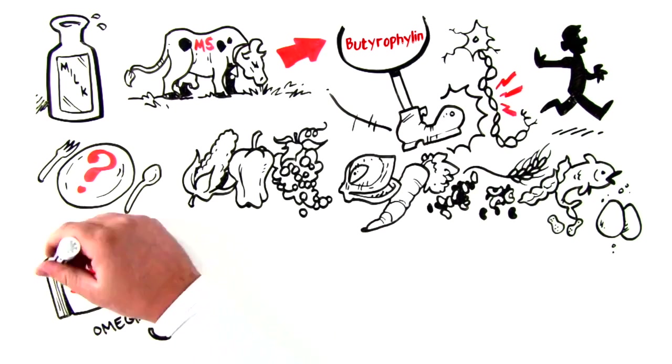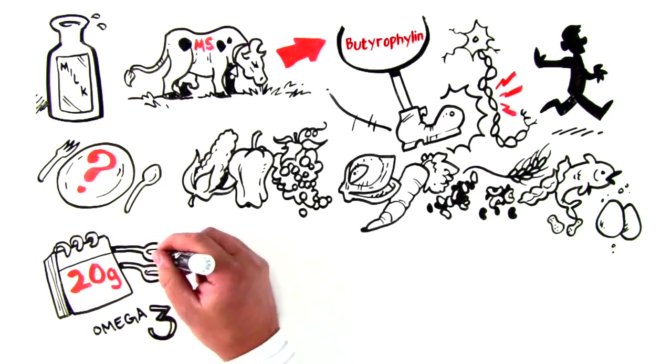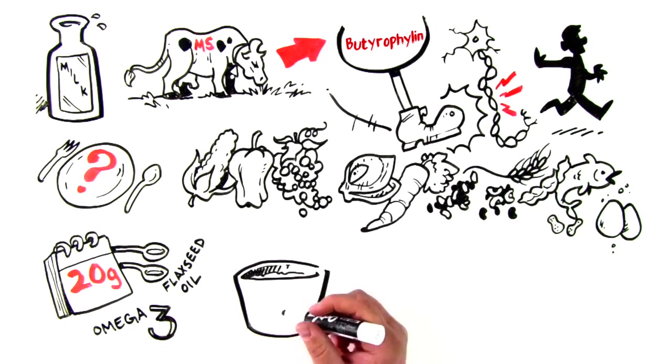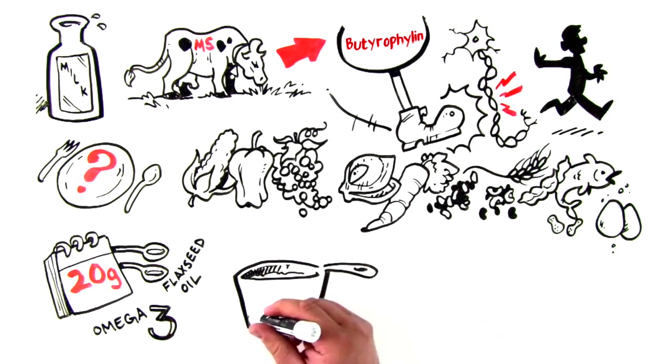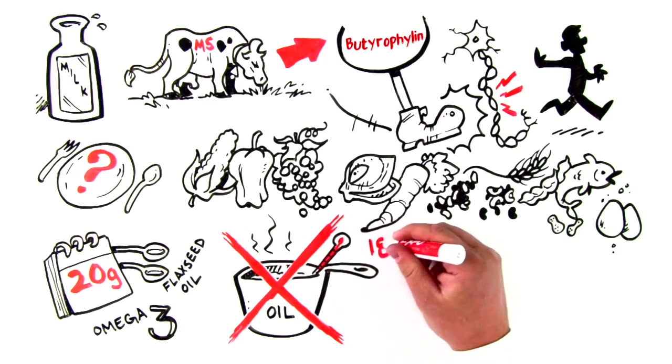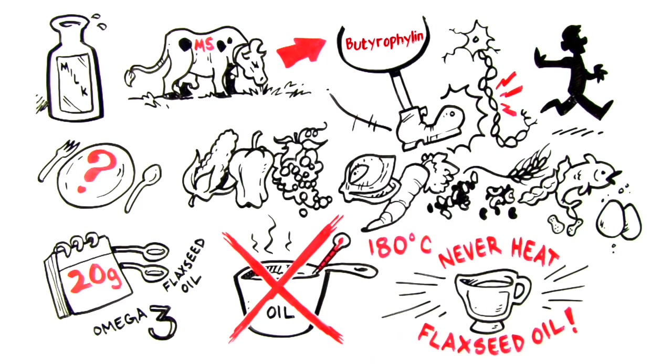Take at least 20 grams of omega-3 daily or four teaspoons of flaxseed oil. Avoid saturated and altered fats like meat, dairy, egg yolks, and anything processed. Do not cook with oil unless baking with olive oil at standard baking temperatures. And never heat flaxseed oil.